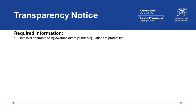If a Minister of the Crown considers it necessary, the Minister may, by regulations, provide that specified public contracts may be awarded as if a direct award justification applies in order to protect human, animal or plant life, or health, or to protect public order or safety. Where this is the case, the contracting authority must confirm that the contract is being awarded directly to a supplier under regulations made by a Minister as per section 42 of the Act. The contracting authority must also provide the title and registration number of the statutory instrument containing those regulations.